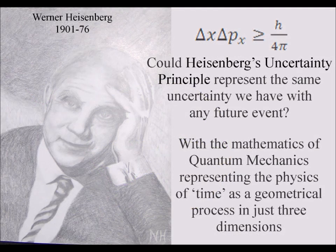In the equation for Heisenberg's uncertainty principle, we have 4π representing spherical geometry of three-dimensional space.